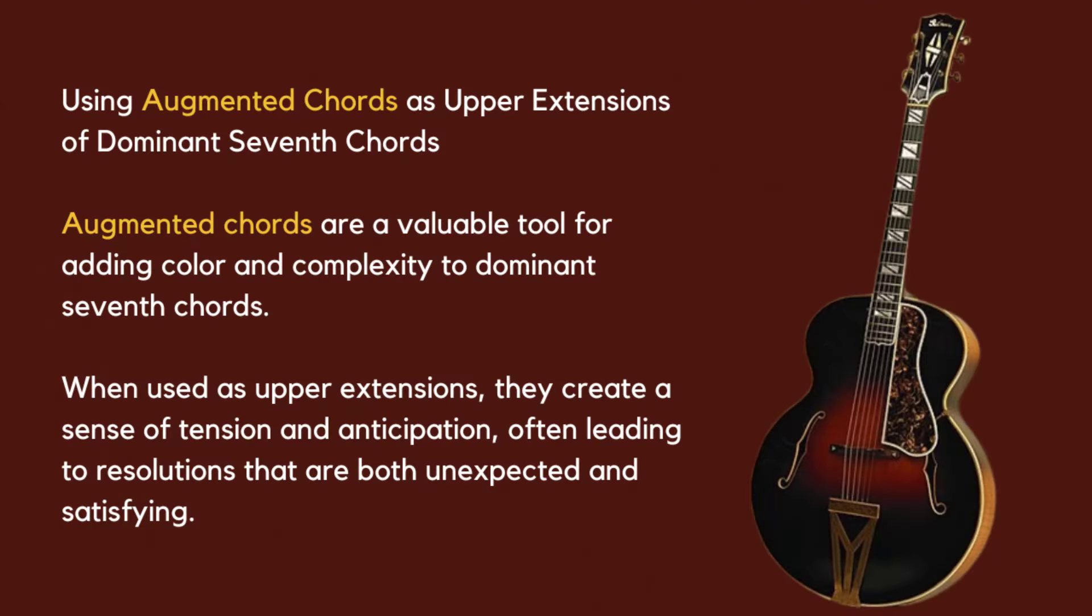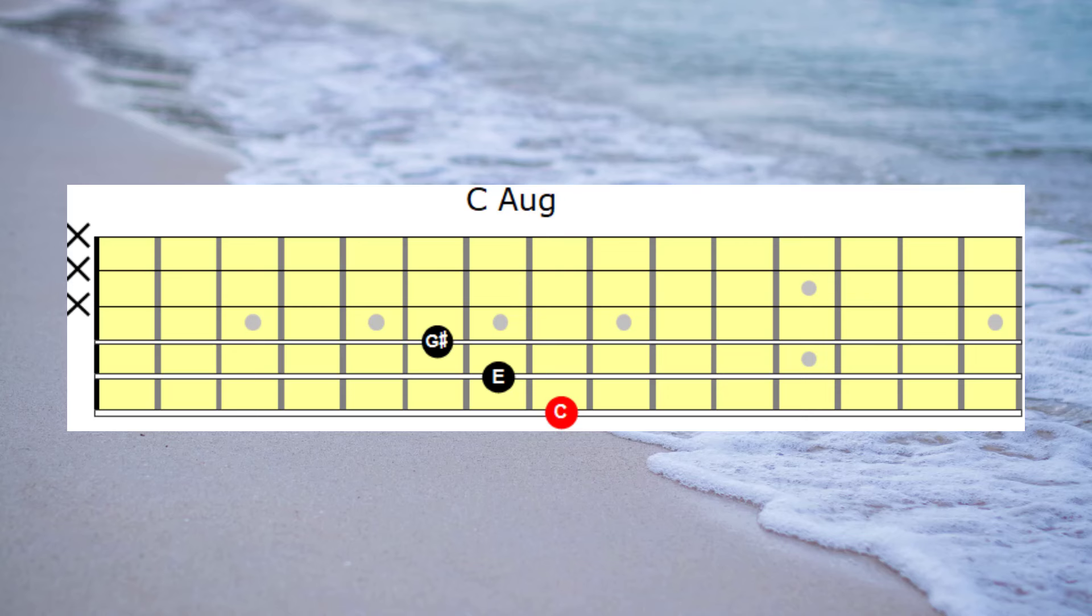In this session, we'll be discussing the application of augmented chords as upper extensions of dominant 7th chords. And this approach will help us achieve the Duke Ellington, Billy Strayhorn type of sound. But before we jump into the arrangement side of things, let's take a moment to familiarize ourselves with some guitar fingerboard maps. And what I mean by that is some of the various ways that we can view the augmented triad on the guitar fingerboard.